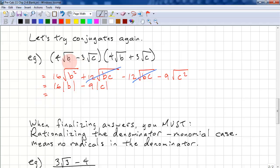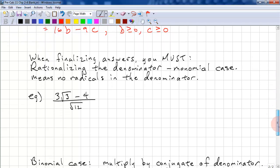But again, our original domain is b is greater than or equal to 0 and c is greater than or equal to 0. So we could simplify this to 16b minus 9c. B greater than or equal to 0 and c greater than or equal to 0.